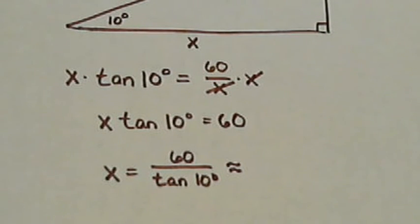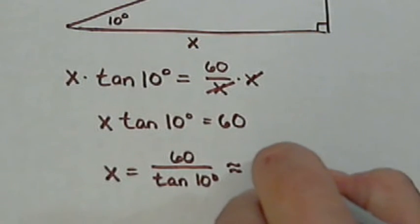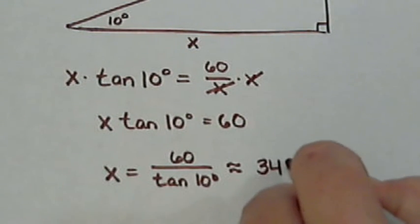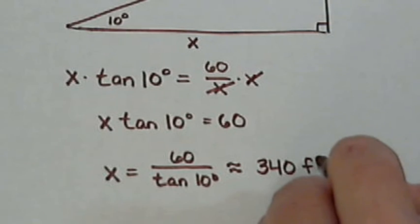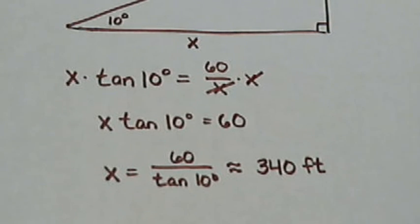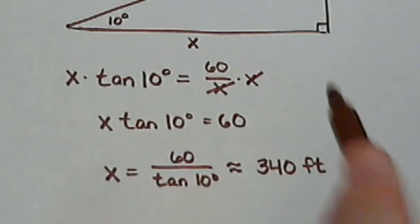So 60 divided by the tangent of 10 degrees gives us a distance of about 340 feet. It actually comes out 340.2769 but we're going to round it off. So this tells us that the shooter was about 340 feet away from the base of the building.